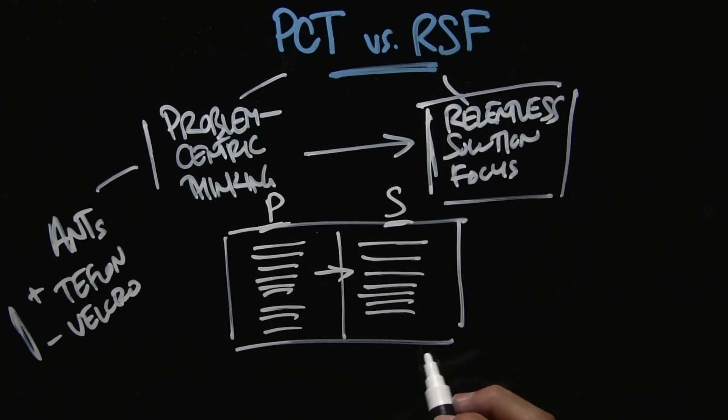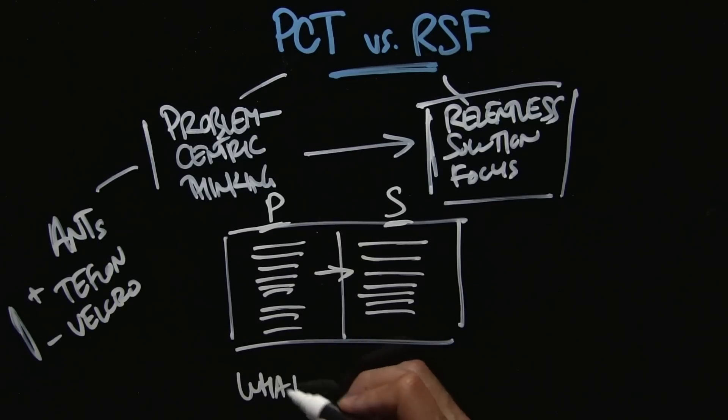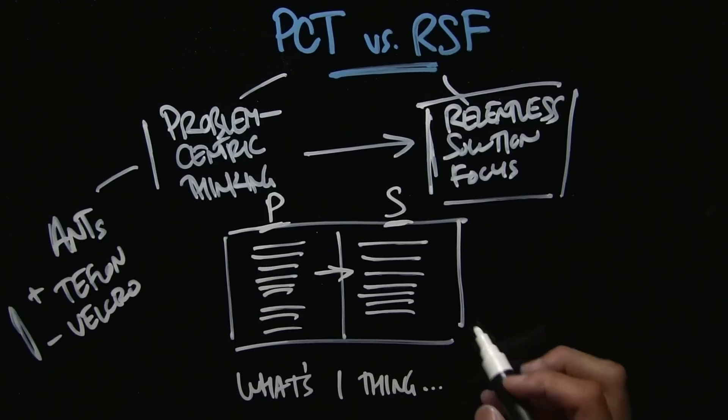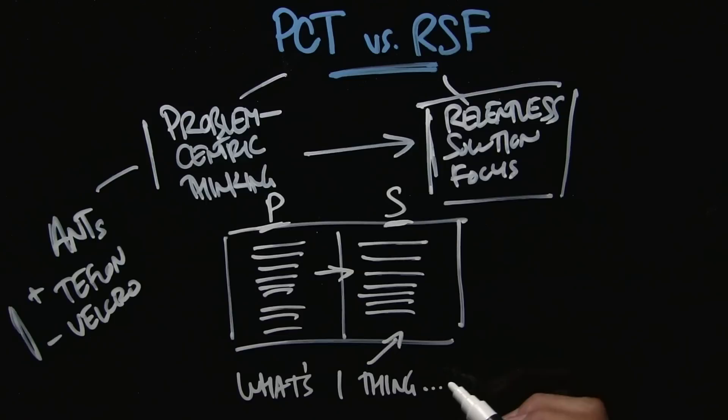Selk tells us that one way to do it is ask yourself the question, what's one thing I can do right now? What's one thing I can do to make this situation just a little bit better? Not perfect, but a little bit better.